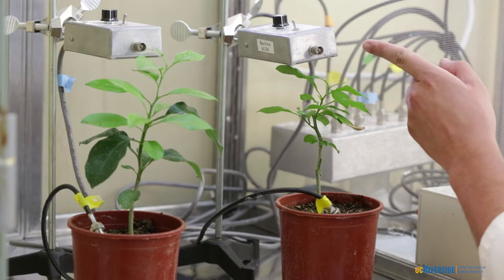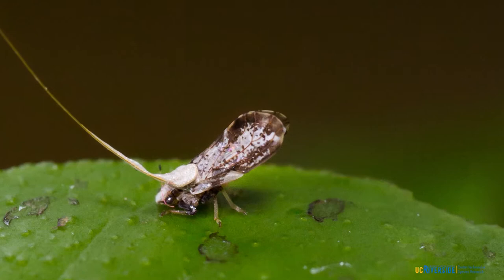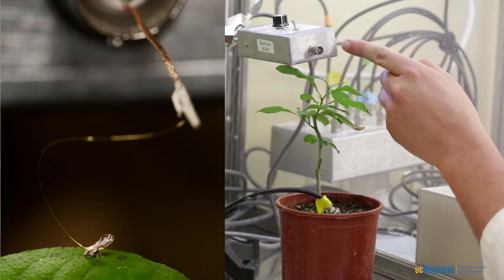and then we actually have our Asian citrus psyllid sitting on the leaf, and we've taken a very small gold wire and glued that to their back, and that's actually being inserted into an amplifier, which you see here.